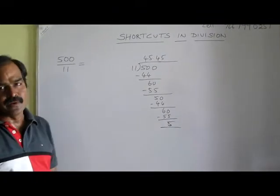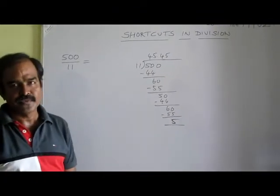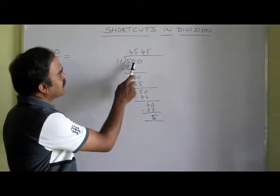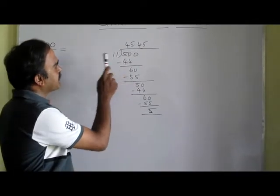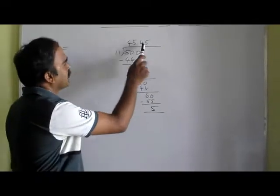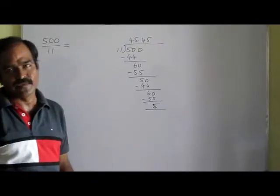500 divided by 11 — what's your answer? Using the conventional method, once we divide 500 by 11, we will get 45.45.